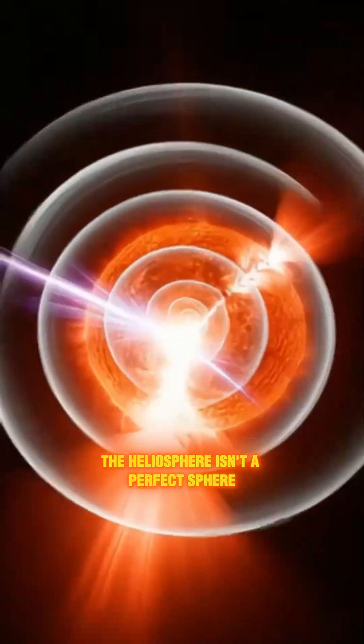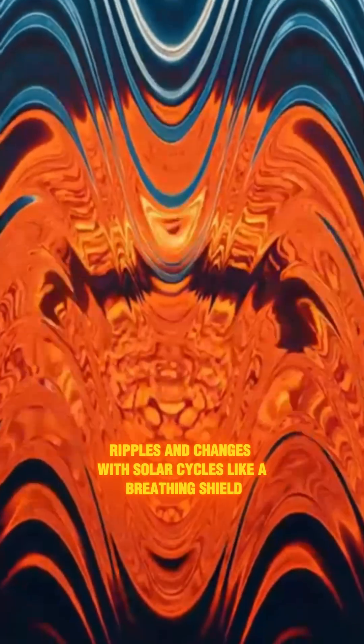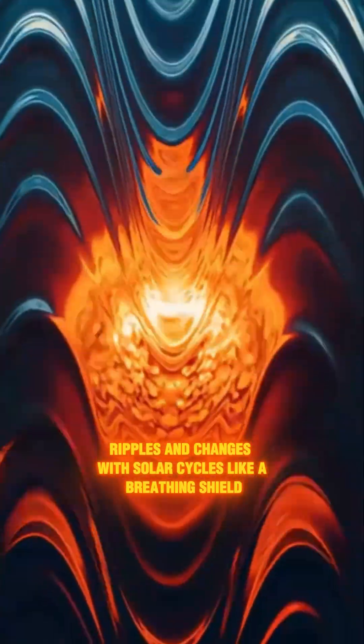The heliosphere isn't a perfect sphere. It flexes, ripples, and changes with solar cycles like a breathing shield.